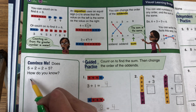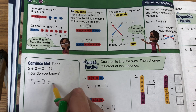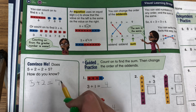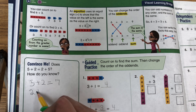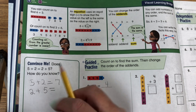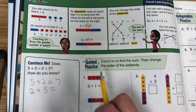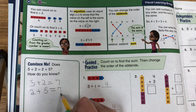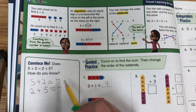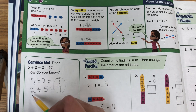5 plus 2 equals 7, and 2 plus 5 equals 7. How do you know? Let's work it out. 5 plus 2 equals: 5, 6, 7. 2 plus 5 equals: 2, 3, 4, 5, 6, 7. So 5 plus 2 equals 2 plus 5, because they have the same sum. So they are the same — that's how I know.